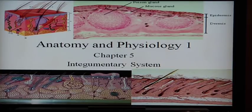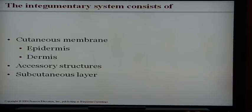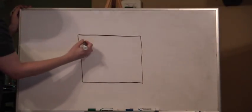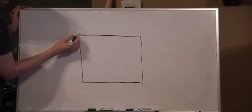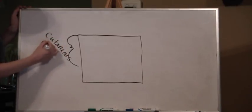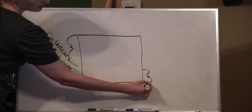Chapter 5, the integumentary system. The integumentary system consists of two main parts with some parts integrated into those main two parts. If you'll look at the board, I'll demonstrate the main two parts, label them, and then get into a little bit more detail. The skin is made up of two main layers: the cutaneous membrane and the subcutaneous membrane.